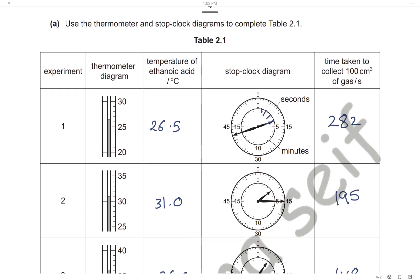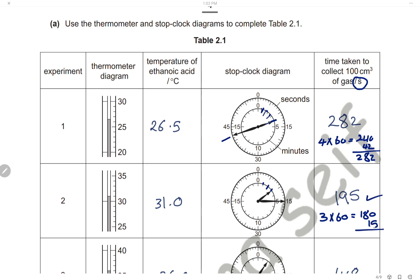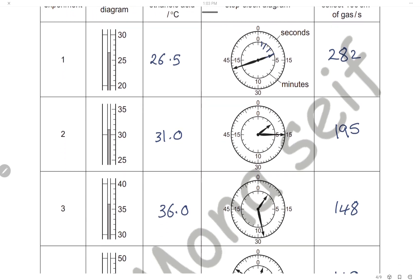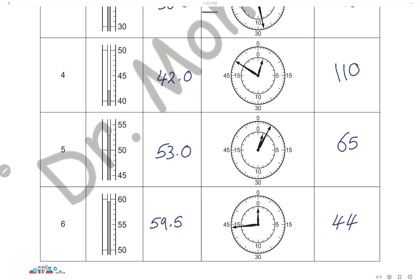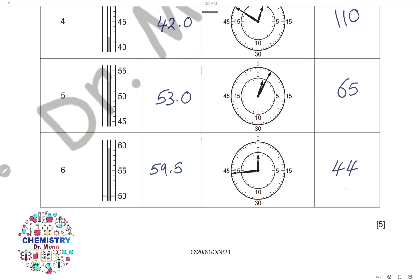For the stop clock diagrams, time is measured in seconds only. The first diagram shows 4 minutes and 42 seconds — 4 minutes is 240 seconds plus 42, giving a total of 282 seconds. The second diagram shows 3 minutes and 15 seconds — 3 minutes is 180 plus 15, giving 195 seconds. The third is 148 seconds, then 110 seconds, 65 seconds, and finally 44 seconds.